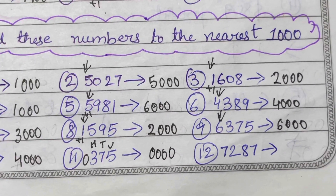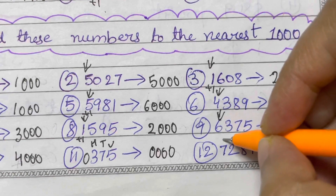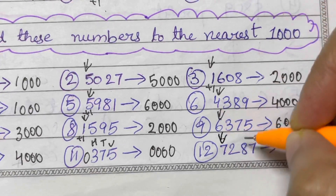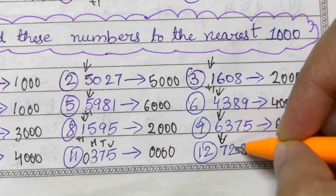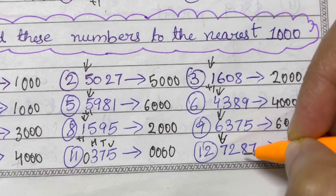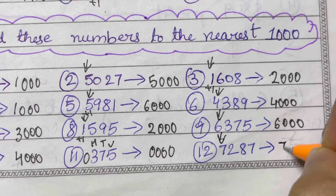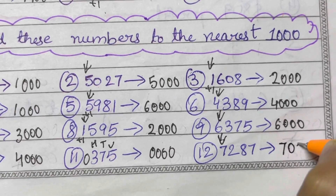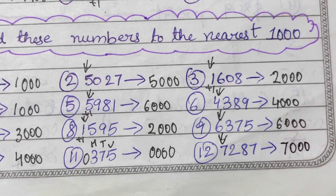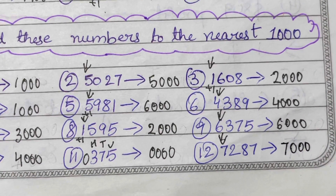7,287. The thousands place is 7, and the digit after that is 2, which is less than 5. So 7 remains unchanged, and all the rest of the digits are 0s — so 7,000.